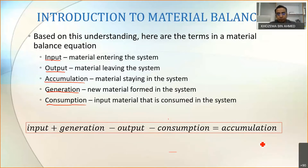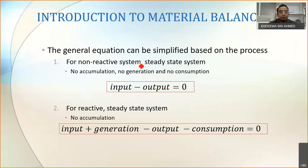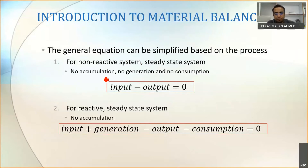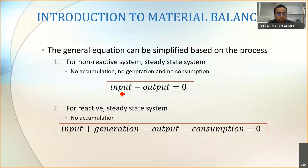Based on that you can simplify the equation to make your calculation much easier. For a non-reactive steady-state system, there is no accumulation because accumulation only happens in an unsteady-state system. If there is no reaction, there will never be any generation or consumption. So the original equation simplifies to: input minus output equals zero, or input equals output.